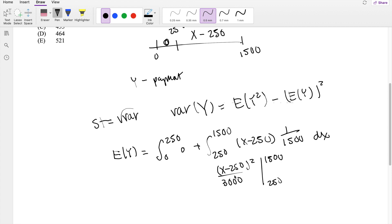The lower limit just gives you 0, right, because 250 minus 250 is just 0, so you just get, this is equal to 1,250 squared divided by 3,000, which is approximately equal to 520.833.